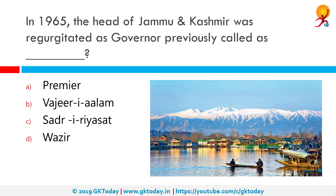In 1965, the head of Jammu and Kashmir was redesignated as Governor, previously called Sadar-i-Riyasat. Among notable differences with other states till 1965, the head of state in Jammu and Kashmir was styled Sadar-i-Riyasat, whereas in other states the title was Governor, and the head of government was styled Prime Minister in place of Chief Minister as in other states.